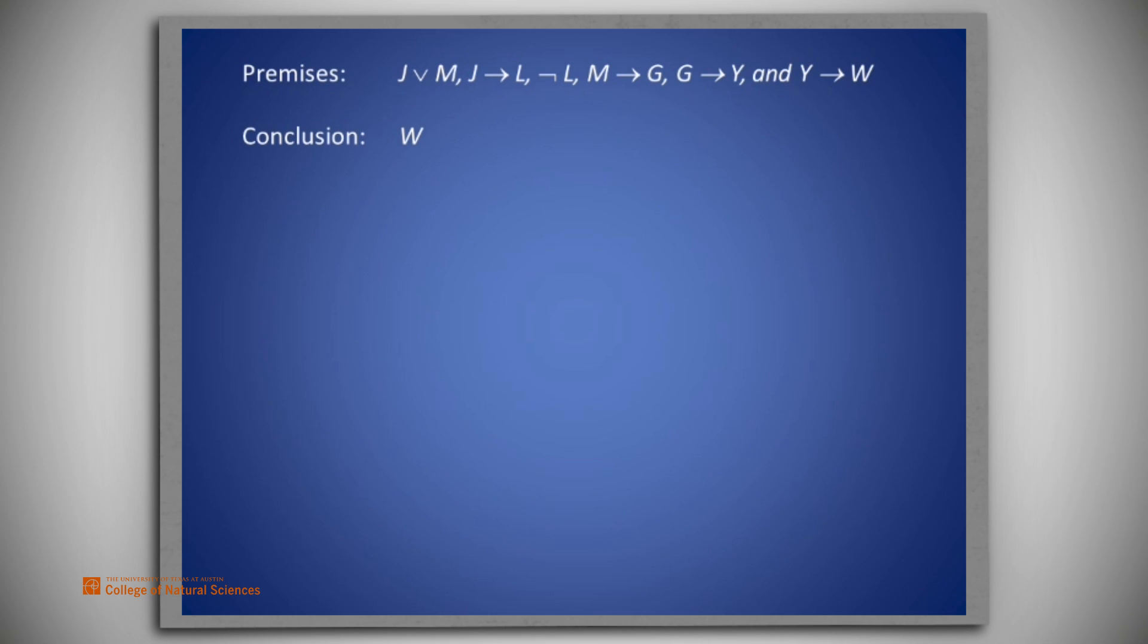How could we conclude W from these premises? Looking backwards through the premises, we see that we could get W if we knew Y. And if we knew G, we could get Y. And if we knew M, we could get G. It seems that getting M is a good intermediate goal for us.